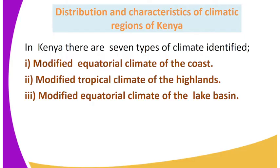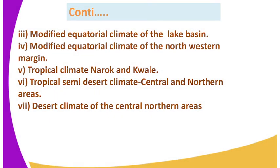In Kenya, there are seven types of climate identified as follows: 1. Modified equatorial climate of the coast. 2. Modified tropical climate of the highlands. 3. Modified equatorial climate of the Lake Basin. 4. Modified equatorial climate of the north-western margin. 5. Tropical climate, Narok and Kwale. 6. Tropical semi-desert climate, central and northern areas. 7. Desert climate of the central northern area.